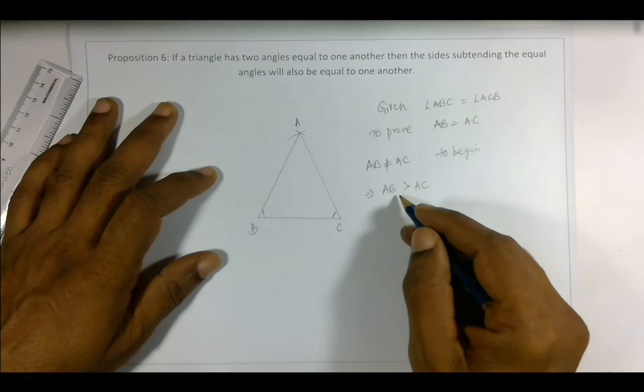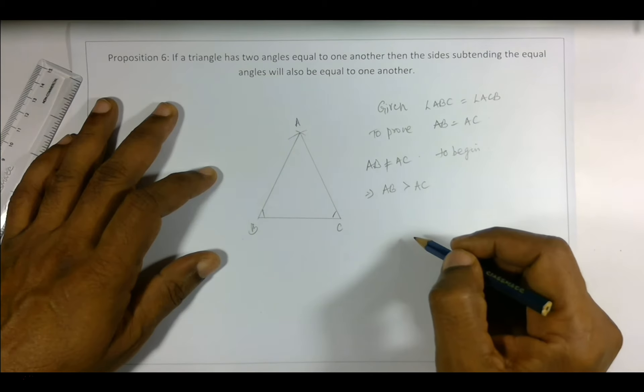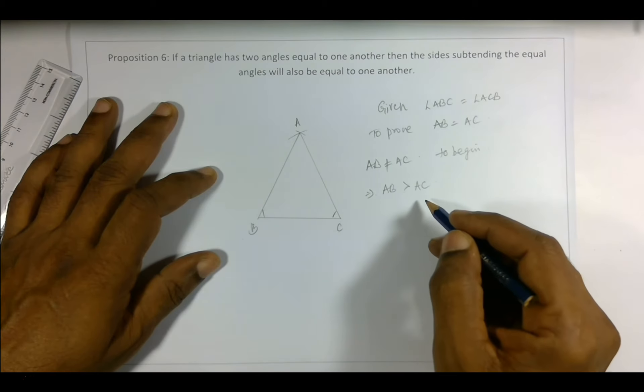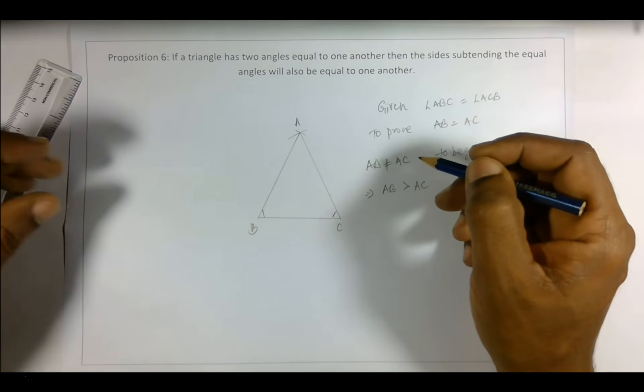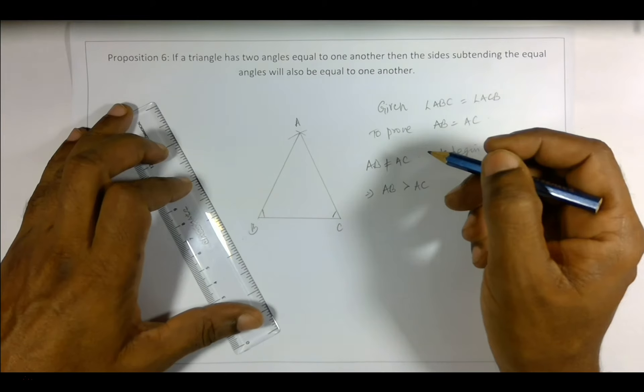So we take any one and proceed further. AB is greater than AC. Now if that is the case, then there must be some point on AB...